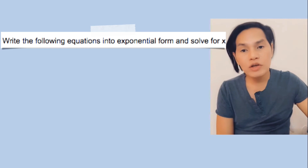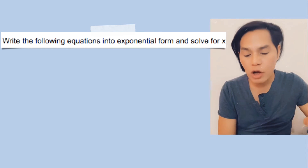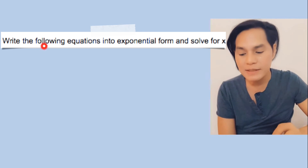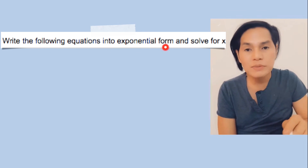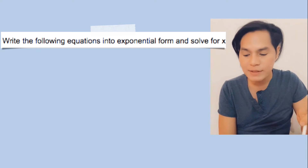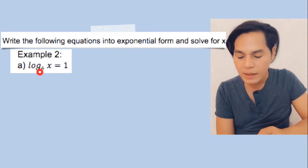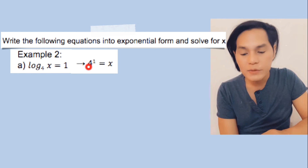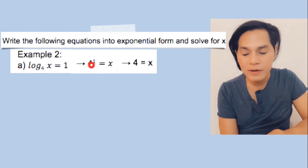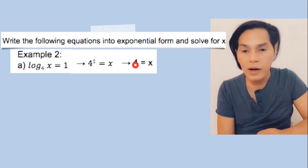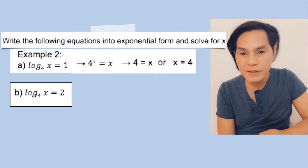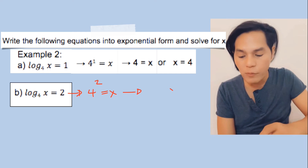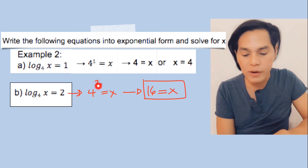Since we know the basic concept and properties of logarithms, let's solve these exercises: write the following equations into exponential form and solve for x. Letter a: the log of x to the base 4 is equal to 1. Simply change this into exponential form — 4 to the power of 1 is equal to x — so x equals 4. Letter b: the log of x to the base 4 is equal to 2. Change it into exponential form: 4 squared equals x, so x equals 16.